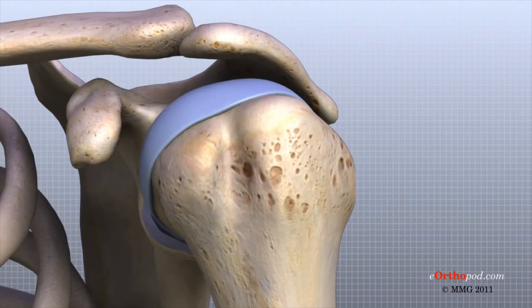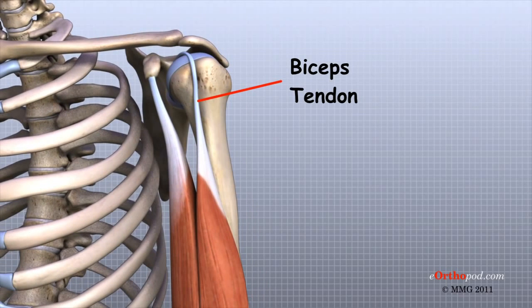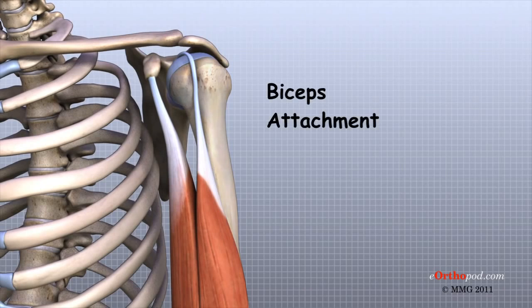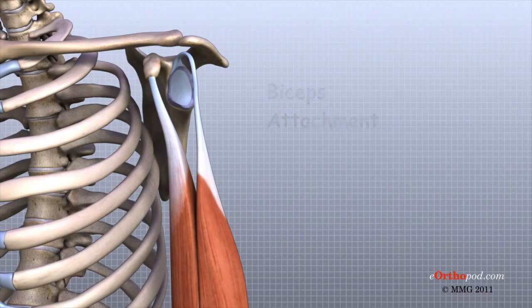The labrum is also where the biceps tendon attaches to the glenoid. Tendons are much like ligaments except that tendons attach muscles to bones. The biceps tendon runs from the biceps muscle across the front of the shoulder to the glenoid, where it attaches to the bone and actually becomes part of the labrum. This connection can be a source of problems when the biceps tendon is damaged and pulls away from its attachment to the glenoid.